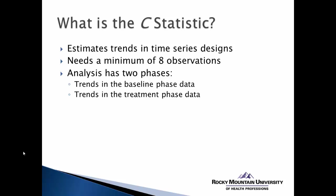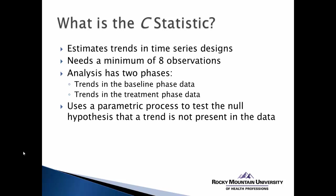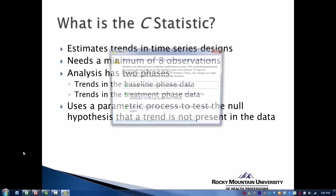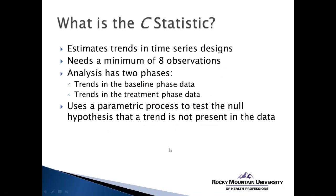If we can say that there are significant changes, then we can say that the treatment phase is different than the baseline phase, and therefore the initiation of the treatment has created these differences. So we're using a parametric process to test the null hypothesis that a trend is not present in the data — first in the baseline data, and then moving from baseline to the experimental or treatment phase.